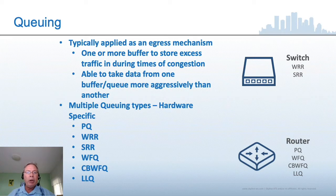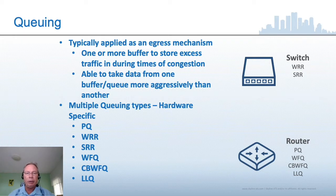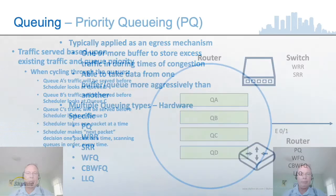We're going to talk briefly about the following queuing mechanisms: priority queuing, weighted round robin, shaped round robin, weighted fair queuing, class-based weighted fair queuing, and low latency queuing. We'll also talk about round robin in order to make it easier to explain weighted round robin.